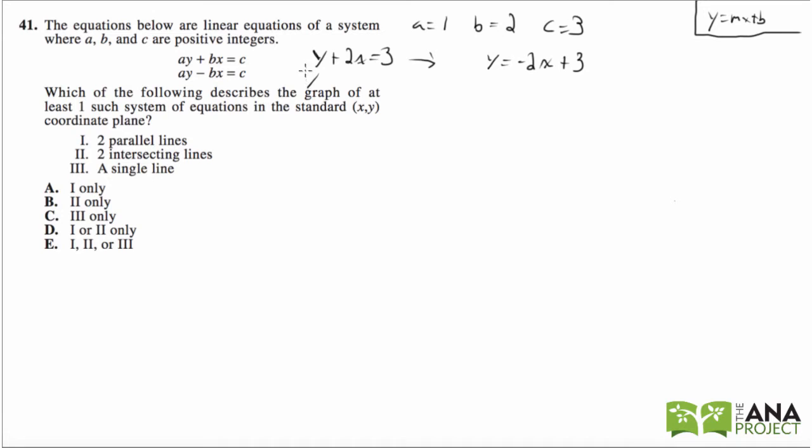ay - bx = c would be y, because a is 1, so 1y minus bx, b is 2, so minus 2x equals c. c is 3, and if we solve for y, this would be y = 2x + 3.